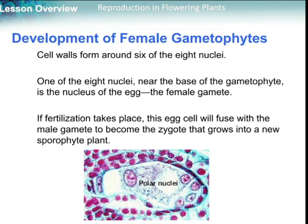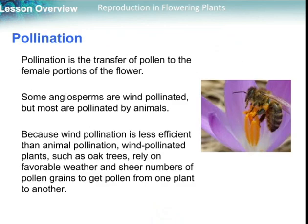If fertilization takes place, this egg cell will fuse with the male gamete to become a zygote that grows into a new sporophyte plant.